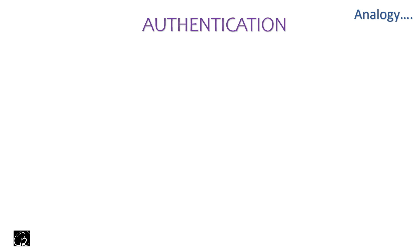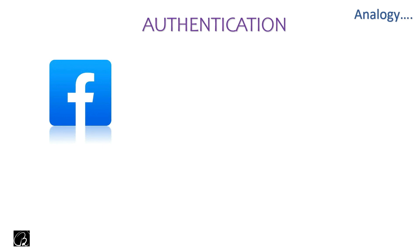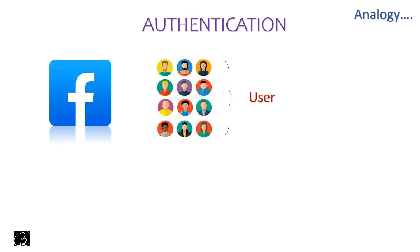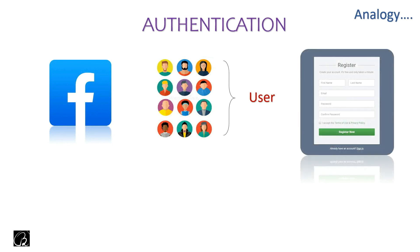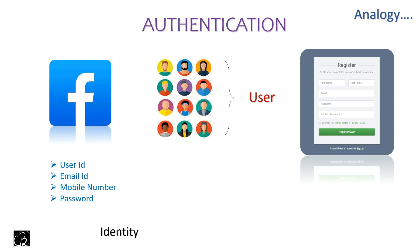The same thing basically happens in an application as well. If I talk about Facebook, instead of having citizens, here we have users. The first step is you have to register yourself — that is also called the signup process — in order to be part of this application. You have to provide some information, and based on that, a unique ID will be created for you, like a username, password, email ID, or mobile number. You can also say you got citizenship for this application.